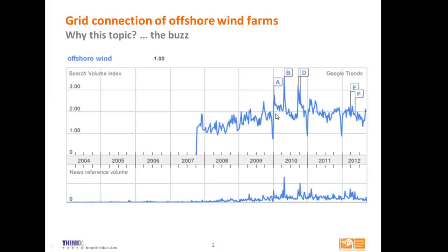These peaks correspond to certain events in the US and UK — one is Google itself entering into offshore wind off the East Coast of the US, and another is the UK doing a round of concessions allocated to offshore wind in 2010. Below the search graph, you see the amount of times offshore wind appeared in online news, showing a similar trend with amounts becoming significant from 2007, with several peaks in 2010. Now let's go to the EU context.